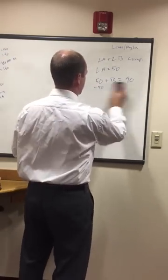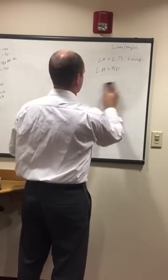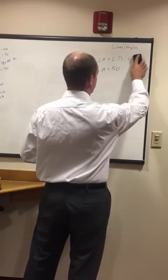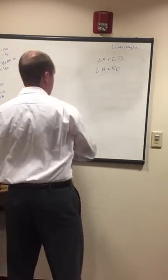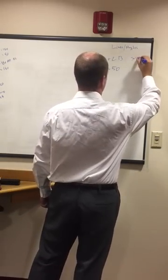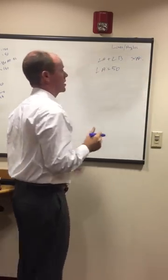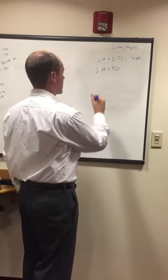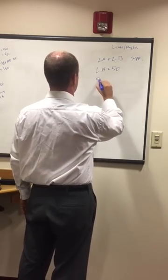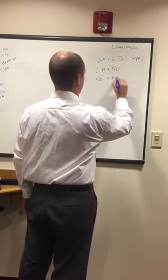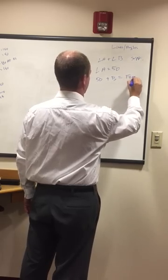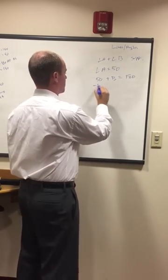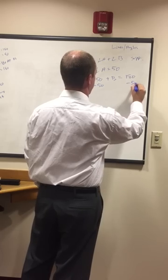What if instead of complementary, it said supplementary — A and B are supplementary, A is 50, what is B? So then we can say 50 plus B equals 180, rather than 90. From here it's pretty easy — subtract 50 from each side, B equals 130.